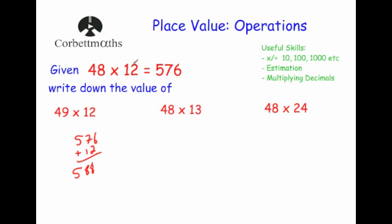Next, similarly, I've changed the 12 to 13 — I've added one onto the 12. Instead of 48 times 12, we can say it's 12 lots of 48, and I've changed that to 13 lots of 48 — in other words, I've got an extra 48. So I'm going to take my answer and add an extra 48 onto it: 576 plus 48 equals 624.